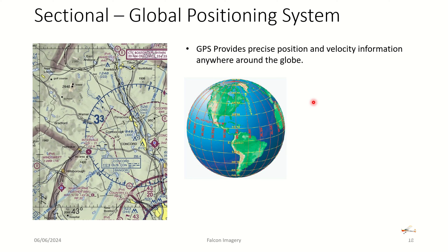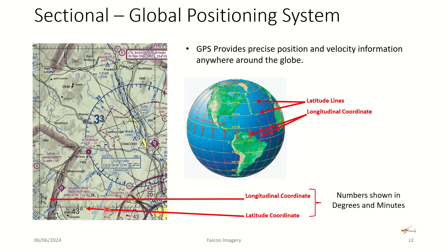Each sectional chart has grid lines representing longitude and latitude, as you can see on the map of the globe. With the numbers displayed on the sectional chart, you can basically identify any particular location with a set of GPS coordinates.